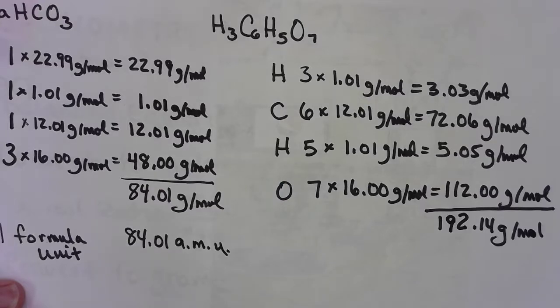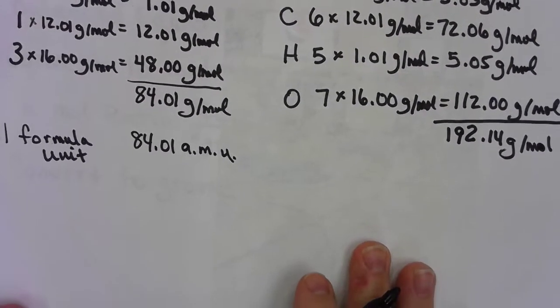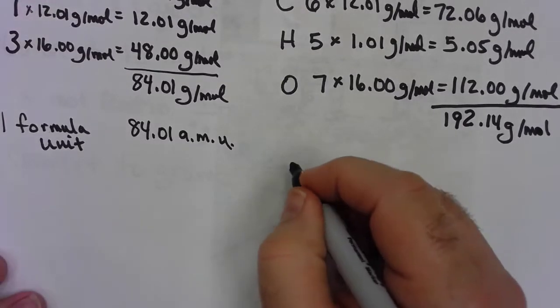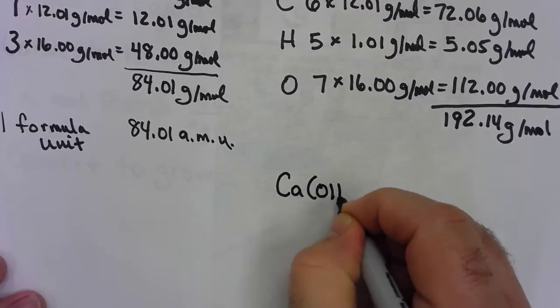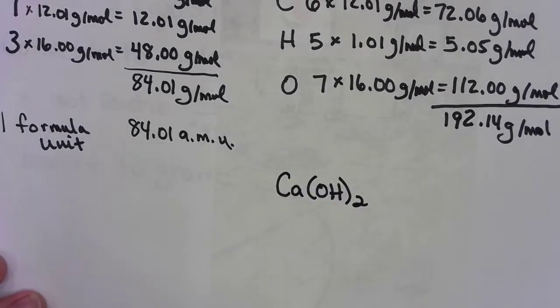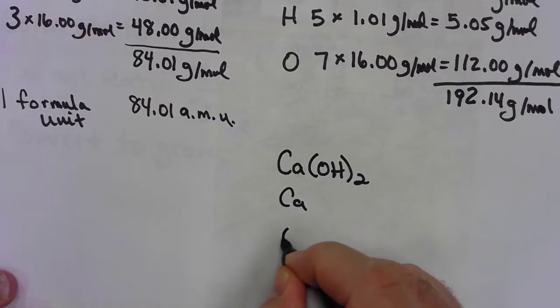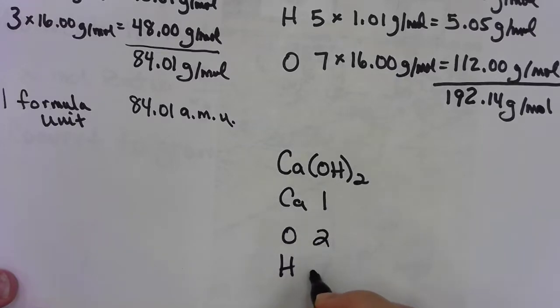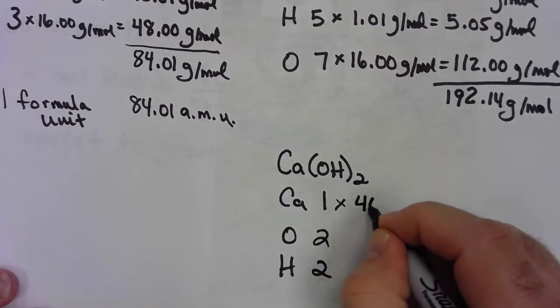If you've got a problem where parentheses might be involved, like perhaps you're doing a—oh, I don't know—how about a calcium hydroxide. If you're doing a formula like that, just make sure that you realize you've got two oxygens and two hydrogens when you start the problem.